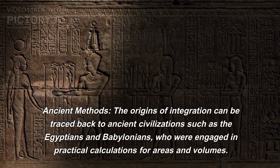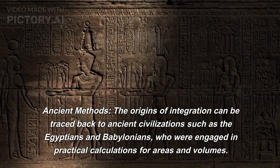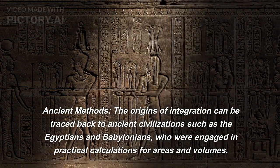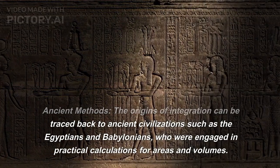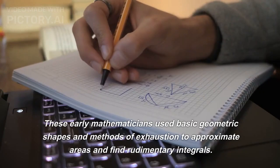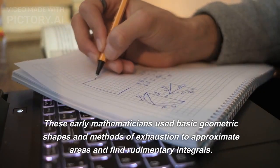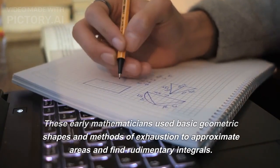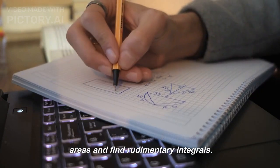Ancient methods. The origins of integration can be traced back to ancient civilizations such as the Egyptians and Babylonians, who were engaged in practical calculations for areas and volumes. These early mathematicians used basic geometric shapes and methods of exhaustion to approximate areas and find rudimentary integrals.